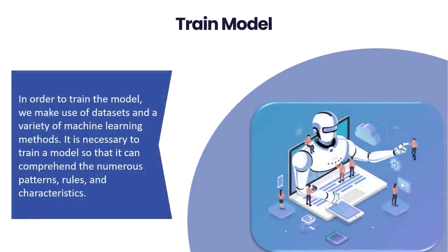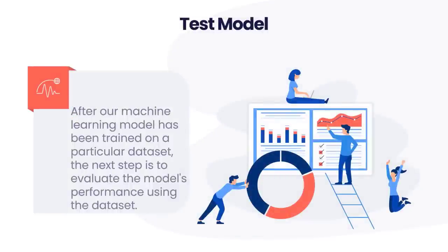Train model: now that we have the model, the following step is to train it. During this stage, we train our model to increase its performance so that we may get a better result. We make use of datasets and a variety of machine learning methods to train the model, so that it can comprehend the numerous patterns, rules, and characteristics. Test model: our machine learning model has been trained on a particular dataset — the next step is to evaluate the model's performance. We provide our model a test dataset so it can be evaluated for how well it represents the data. The testing establishes the percentage of accuracy possessed by the model in accordance with the prerequisites of the problem.